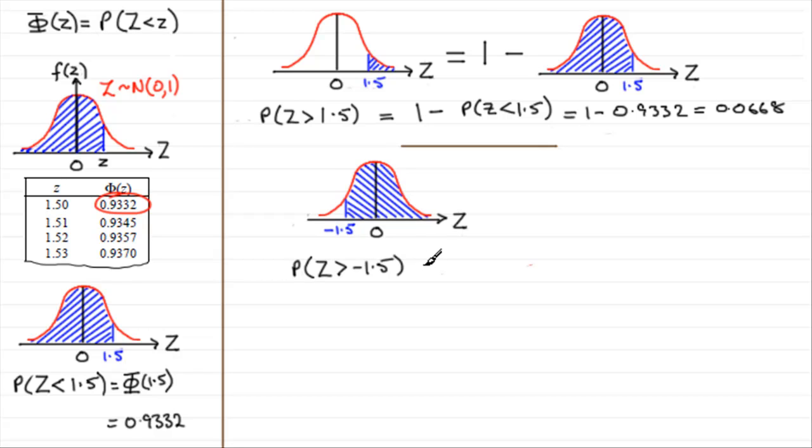Well, what we need to do is just use the symmetry of the graph. We could reflect this area in the axis here. Because the graph is symmetrical, we see that the probability of being more than minus 1.5 is the same as the probability of z being less than 1.5.